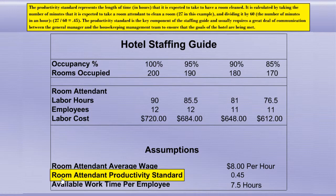The productivity standard represents the length of time in hours that it is expected to take to have a room cleaned. It is calculated by taking the number of minutes expected for a room attendant to clean a room — 27 in this example — then dividing by 60, the number of minutes in an hour. 27 divided by 60 equals 0.45. The productivity standard is the key component of the staffing guide and usually requires a great deal of communication between the general manager and the housekeeping management team to ensure that the goals of the hotel are being met.